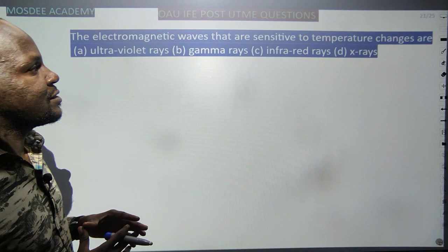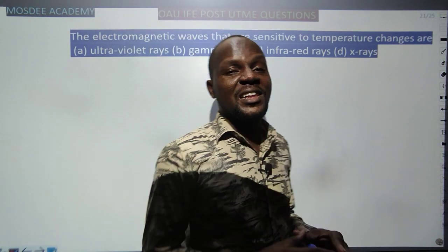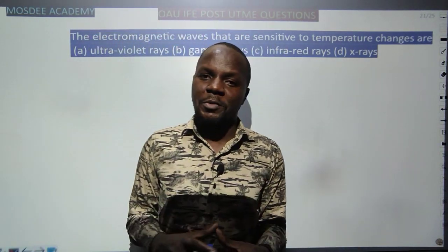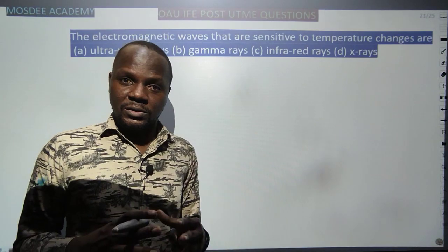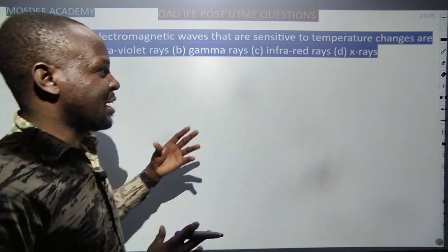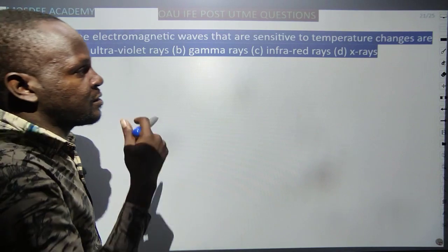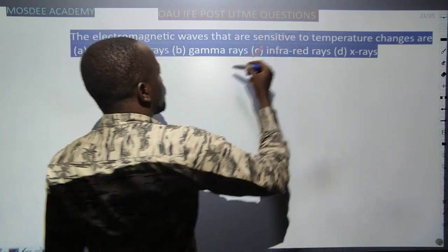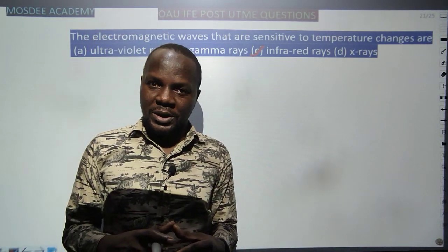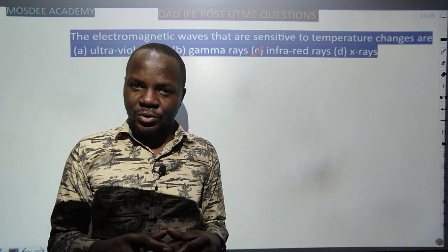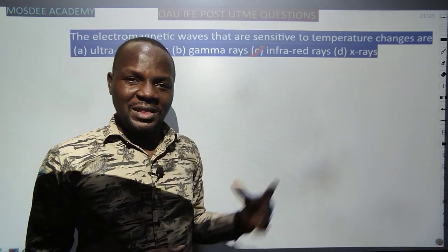The electromagnetic wave that is sensitive to temperature changes: under electromagnetic waves, the one that is sensitive to heat or temperature changes is infrared rays. Gamma rays are formed in the nucleus of radioactive substances. X-rays are produced by heating electrons on a target material in a cathode ray tube.